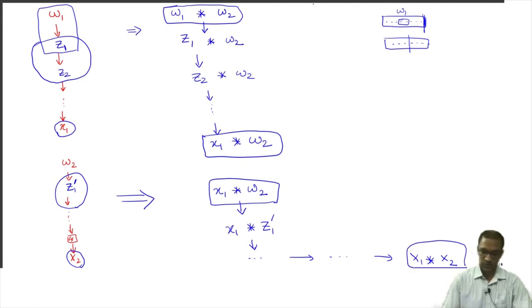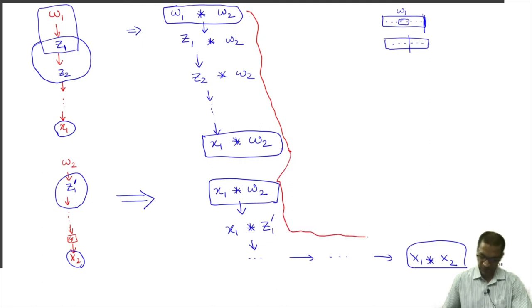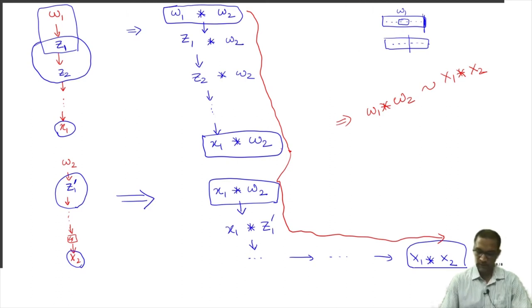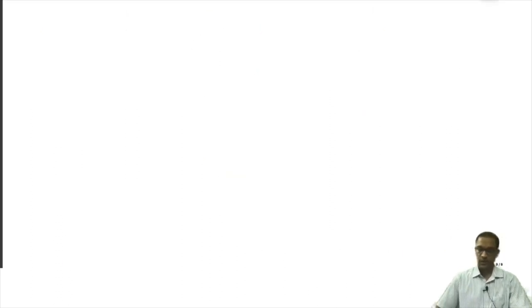So now I just put these together. What have I managed to do? I have managed to start at W1 star W2 and follow this chain of rewriting rules. At this point these are the same, and then I follow the second chain of rules and finally reach my destination. This means that W1 star W2 is in fact equivalent to X1 star X2 as required. What this means is that on my group G — at the moment my set G — the binary operation that I have defined is well-defined.